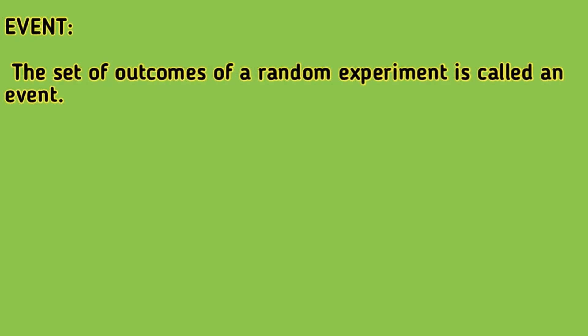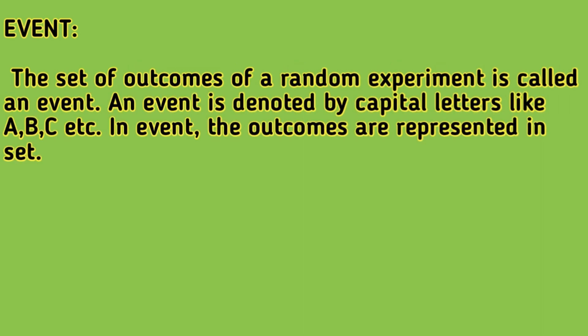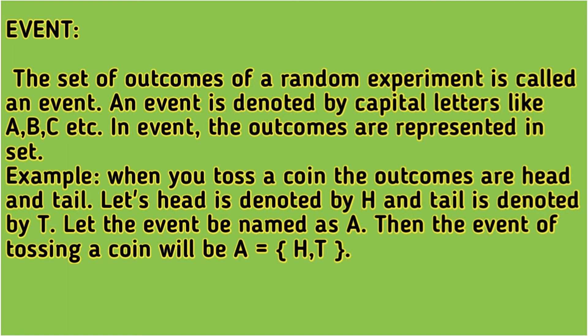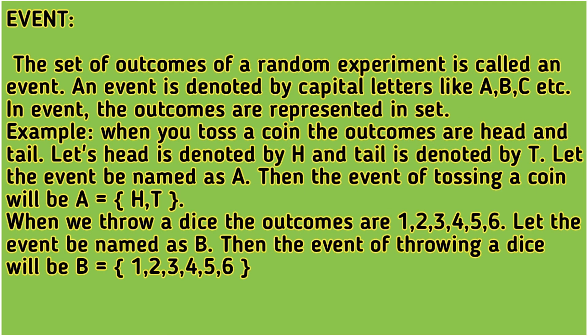Then, event. The set of outcomes of a random experiment is called an event. An event is denoted by capital letters like A, B, C, etc. The outcomes are represented in a set. For example, whenever you are tossing a coin, the outcomes are head or tail — denoted by H and T. So if the event is denoted by A, then A = {H, T}. Or if you are tossing a dice and the event is named B, then the outcomes will be {1, 2, 3, 4, 5, 6}.